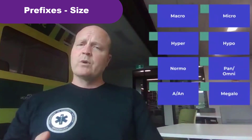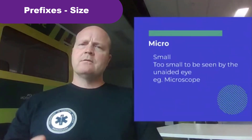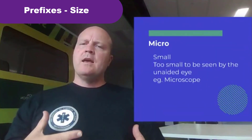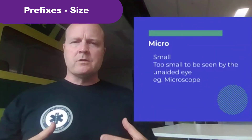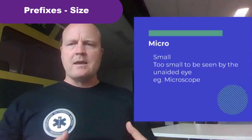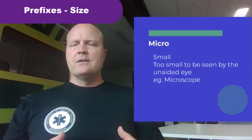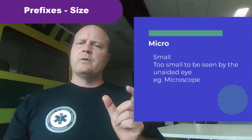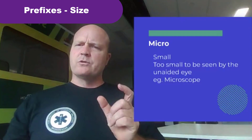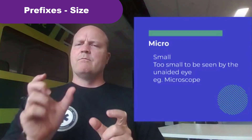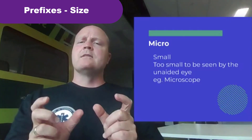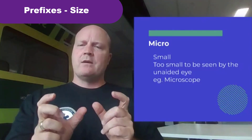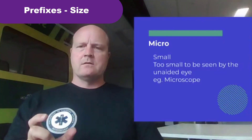Which then brings us to 'micro'. Micro means small and too small to be seen by the naked eye. So a microscope — 'scope' means to take a picture or to view — a microscope lets you look at things that are smaller than we can see with just our eyes.